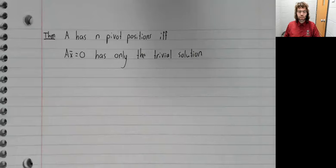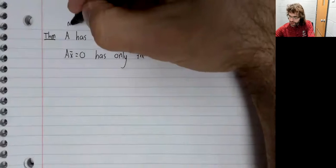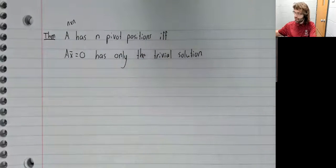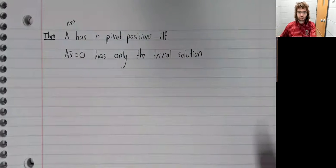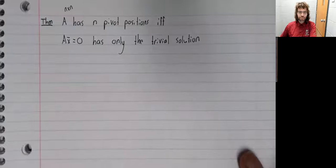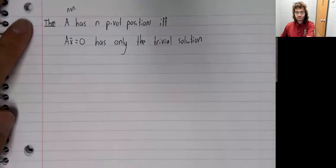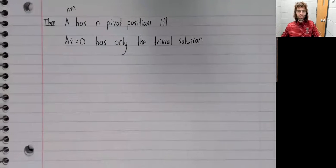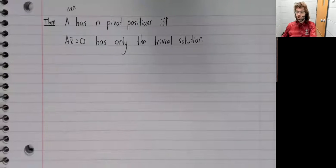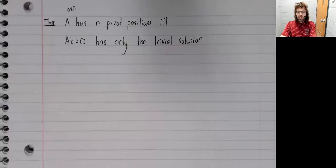Theorem. The matrix A, the n by n matrix A has n pivot positions if and only if the matrix equation Ax equals zero has only the trivial solution. And even though this is an if and only if statement, we'll prove it in one go as follows.